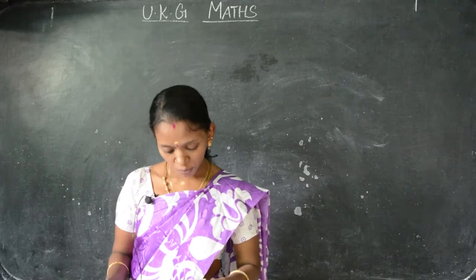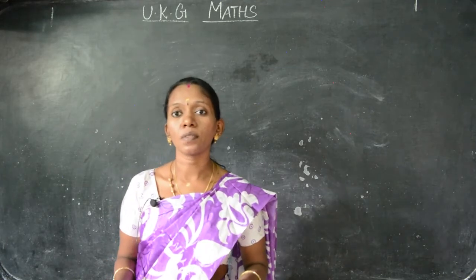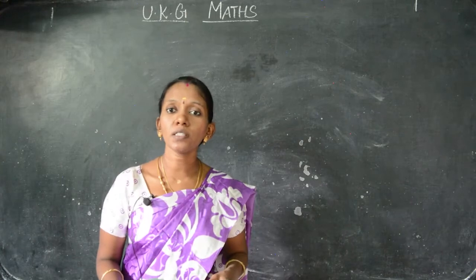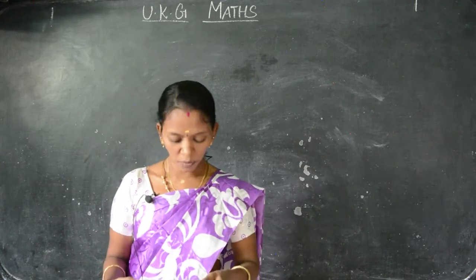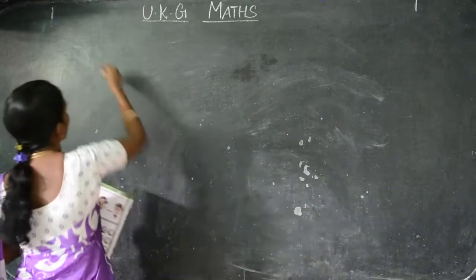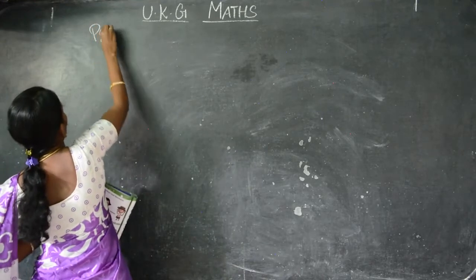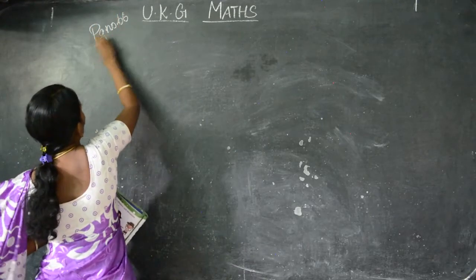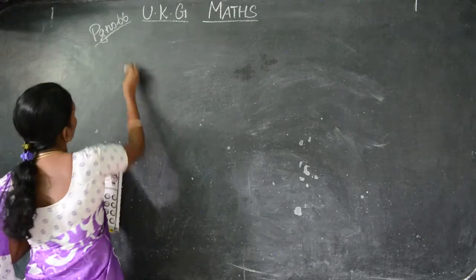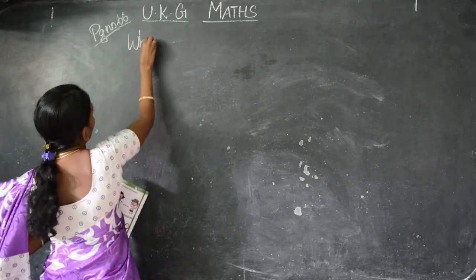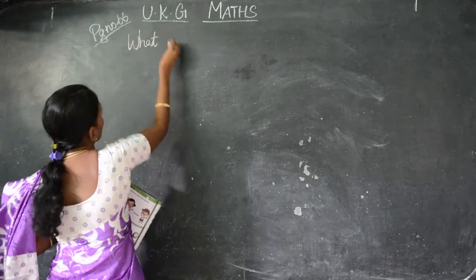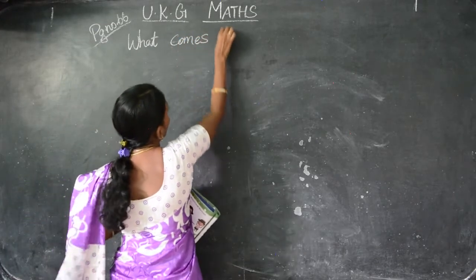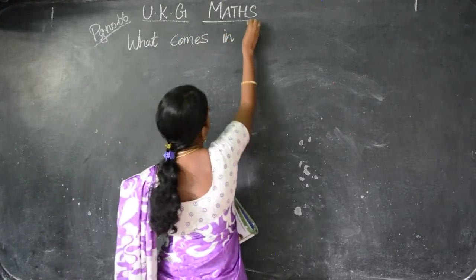Turn to page number 66. Take your textbook children, take it fast. Take your page number 66. What comes in between.